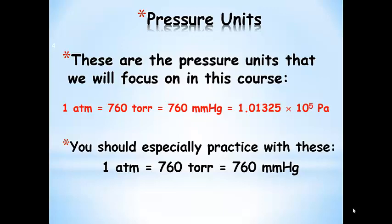When we talk about gases, one of the observables we're going to look at is pressure, so we need familiarity with pressure units. One atmosphere is equal to 760 torr, which is also equal to 760 millimeters of mercury. All of these are equal to 1.01325 times 10 to the fifth pascals — Pa is the abbreviation for pascals. You should especially practice with atmospheres, torr, and millimeters of mercury.